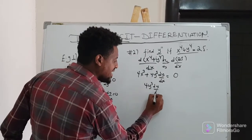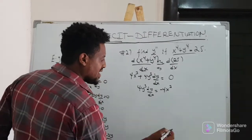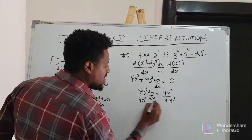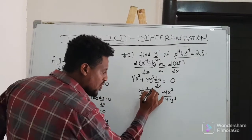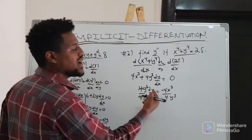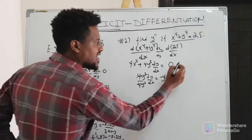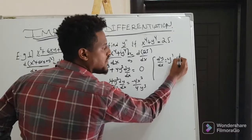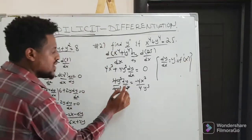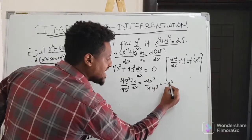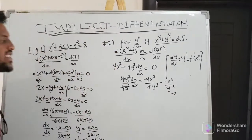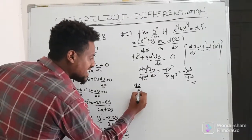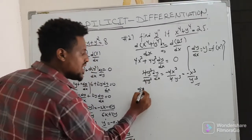Now for the next example with x to the fourth plus y to the fourth. Differentiating: 4y cubed dy by dx equals negative 4x cubed. So dy by dx equals negative 4x cubed over 4y cubed, which simplifies to negative x cubed over y cubed. Now we have dy by dx, and we also want d squared y by dx squared — the second derivative.